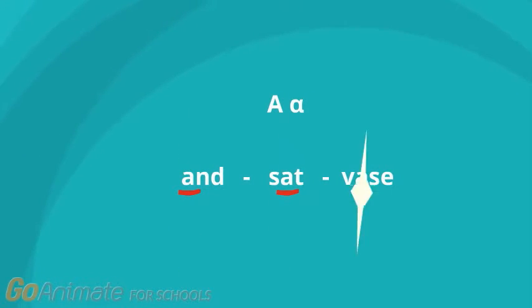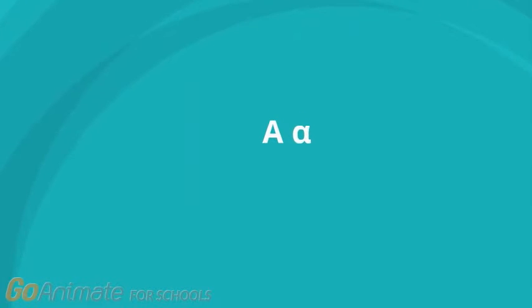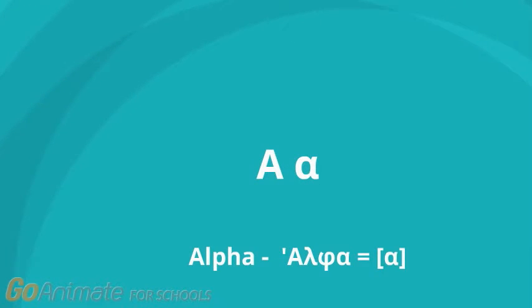So one symbol corresponds to one specific sound. That's not so uncommon you might think. Well, here are some of the sounds that the A letter can acquire in English. And sat, vase. And don't get me started on the rest of the vowels. Now in Greek the alpha has only one sound, the A, as in father.